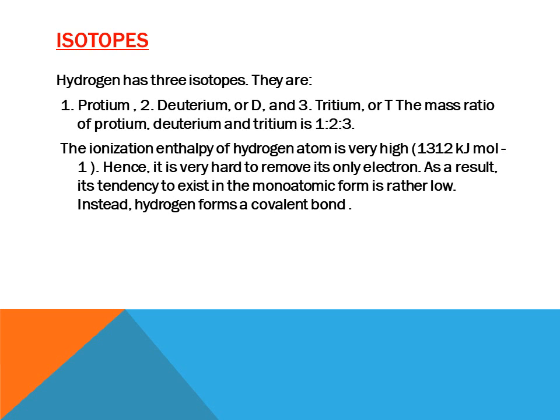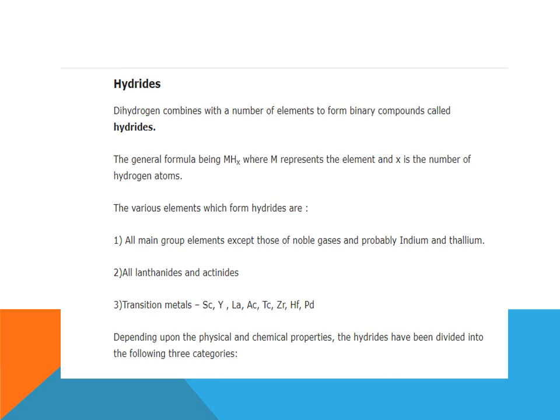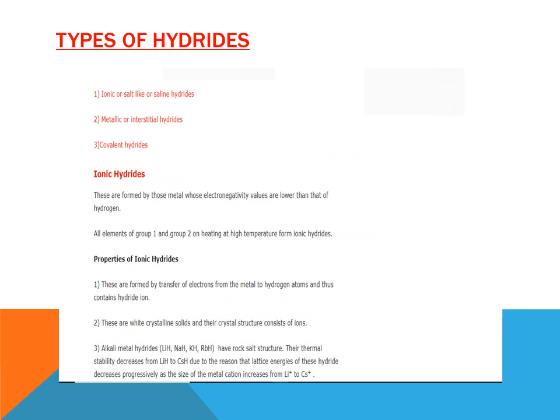Now, what about hydrides? Hydrogen, that is H₂, dihydrogen combines with a number of elements to form binary compounds called hydrides with formula MHₓ, where M is the element and X is the number of hydrogen atoms. The various elements which form hydrides are: number 1, all main group elements except noble gases; number 2, all lanthanoids and actinoids; number 3, transition metals. Depending upon their physical and chemical properties, hydrides are divided into three categories: number 1, ionic or salt-like or saline hydrides; number 2, metallic or interstitial hydrides; number 3, covalent hydrides.